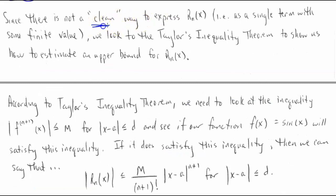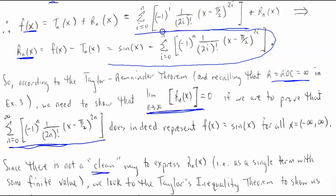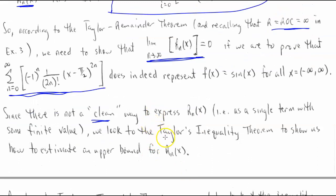We don't have a nice clean way to express R sub N of X as a single term with some finite value. There's no way to take sine of X minus all the polynomial terms and express it as a clean polynomial representation. So since we can't do that directly, we're going to look to Taylor's Inequality Theorem to show us how to estimate an upper bound for this particular remainder.